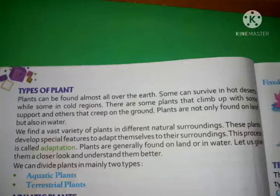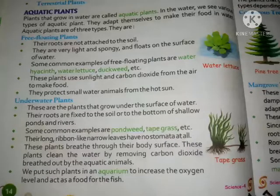Plants are generally found on land or in water. We can divide plants into mainly two types: number one is aquatic plants, and number two is terrestrial plants. Plants that grow in water are called aquatic plants.